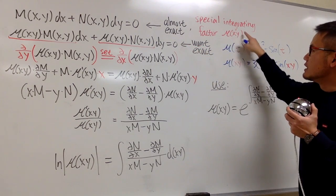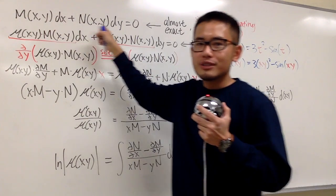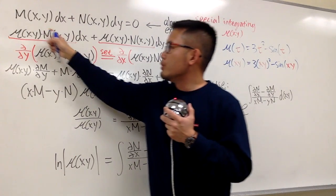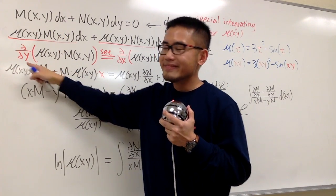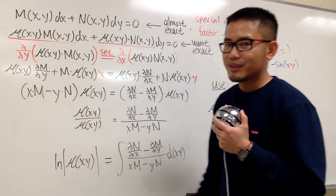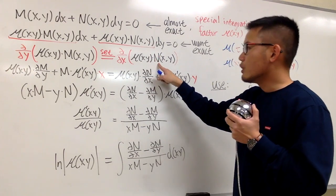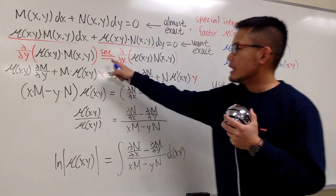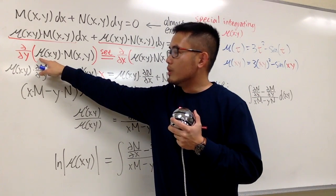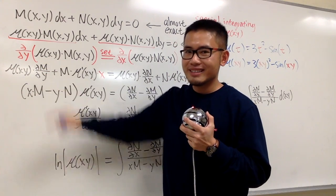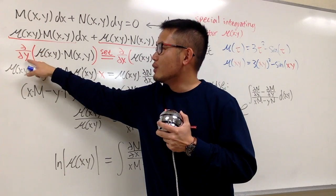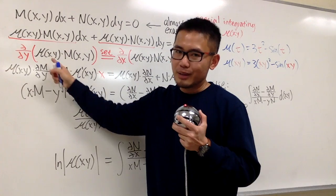Now let's get to work. We take the integrating factor and multiply it through the almost exact differential equation, and we want the result to be exact. That means I take the mu times M term and do the partial derivative with respect to y, and take the mu times N term and do the partial with respect to x. We set them equal to ensure exactness. We have to be careful because mu is a function of x times y, and M is a function of x and y — it's a product, so we use the product rule when differentiating with respect to y.